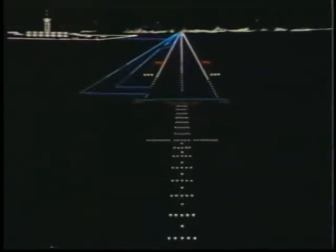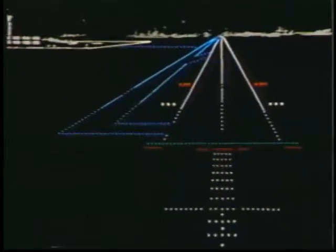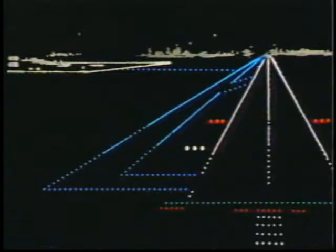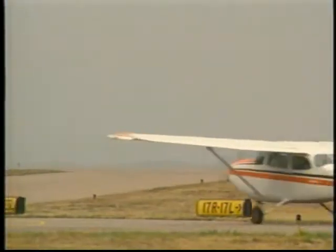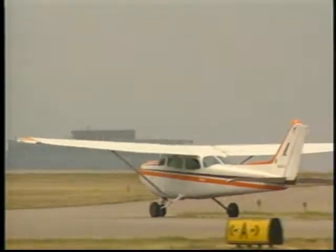If you plan on flying after sunset, you should be familiar with information in the chapter on aeronautical lighting. Things like specific airport and obstruction lighting are explained in detail. The different types of airport markings and signs are also covered.